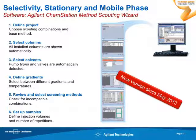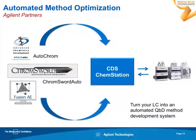The system will run fully automatically, for example overnight, checking all the screening conditions. The next morning you come into the lab, check the results, and start fine-tuning the most promising combination of solvent and column. If you would like to go a step further, we highly recommend using one of our partner solutions for automated method optimization and robustness tests, turning your LC system into a complete automated QbD method development system. We partner with ACD Labs, Chromsword, and S-Matrix. Combined with the Method Scouting Wizard from Agilent, we have the biggest portfolio of software to support your method development tasks.